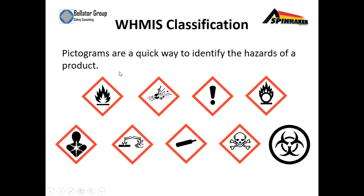Pictograms are a great way to identify the hazards of a product, and they include everything from flammable to health hazards to corrosion. What's typical of most of these pictograms is that they're all in a red diamond-shaped box, with the exception of the biohazard symbol.